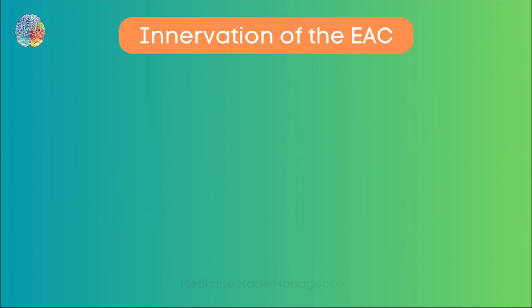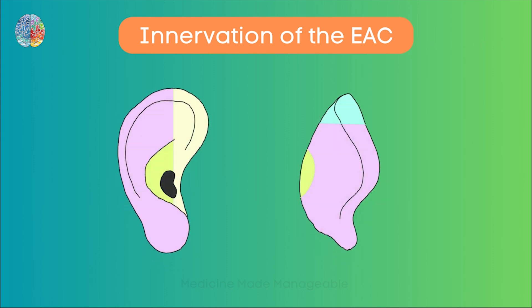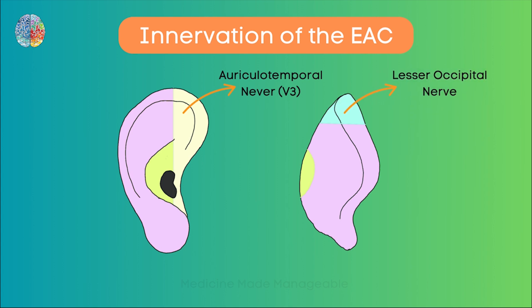Now let's talk about the innervation of the EAC, but first it helps to know the innervation of the pinna since both are related. The medial-most part of the anterior pinna is supplied by the auriculotemporal nerve, a branch of V3. The tip of the back side of the pinna is supplied by the lesser occipital nerve. The concha — which is the central depression — both front and back, is supplied by the 7th and 10th cranial nerves. The greatest portion of the auricle is supplied by the greater auricular nerve.